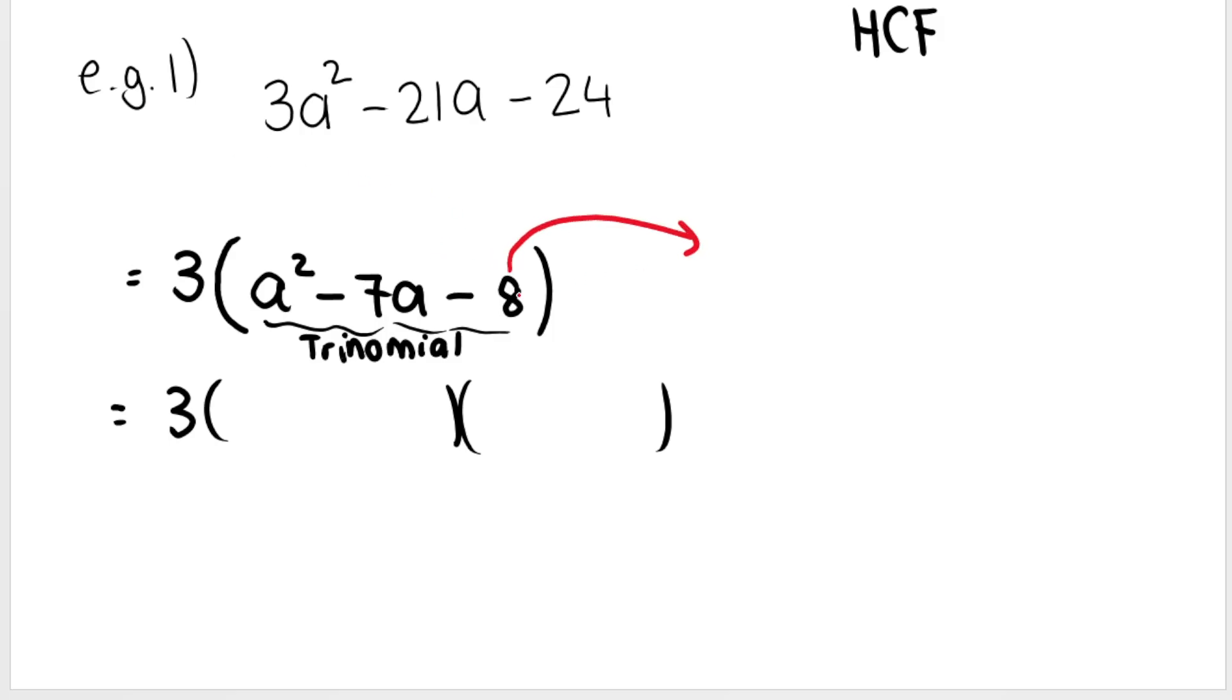You look at the last one, the constant, and you say, okay, it's 1 times 8, or it's 2 times 4. We need to choose one that helps me make the middle term. So 7, negative 7. 2 and 4 is not going to get me there because 4 plus 2 is 6, 4 minus 2 is 2, so it's not that one. It's going to be 1 and 8.